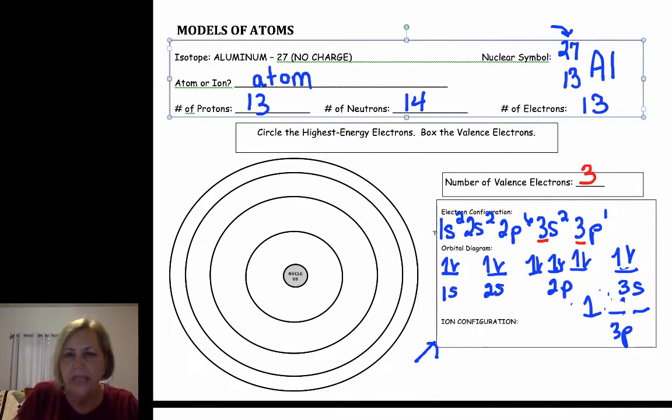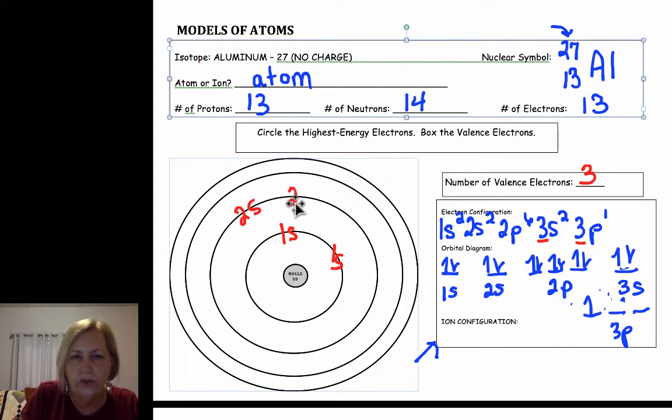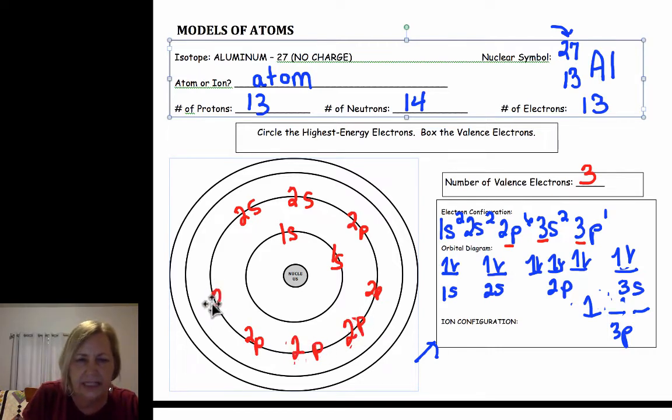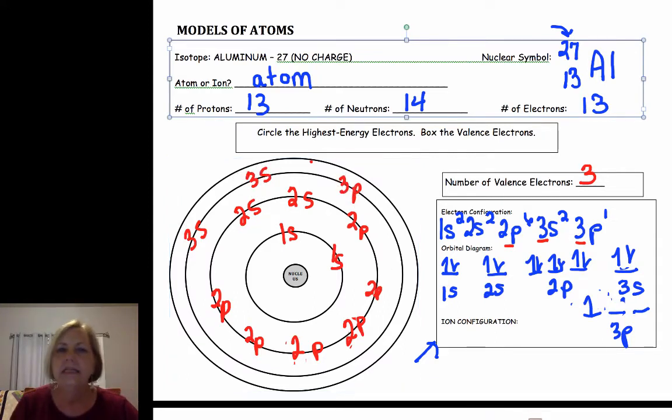Now let me show you how we would put these into an orbital diagram. I'm going to use a symbol for each electron. This is the 1s, energy level one, and there are two electrons. In the second energy level I have two 2s electrons and then I have my six 2p electrons. Then I look at the third energy level. I have a 3s, a 3s, and a 3p. That's how I put those electrons in.